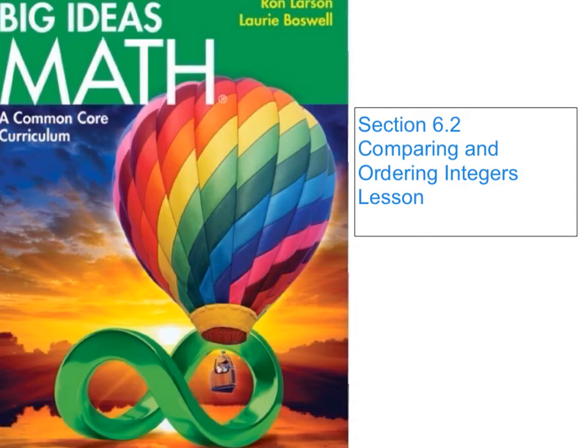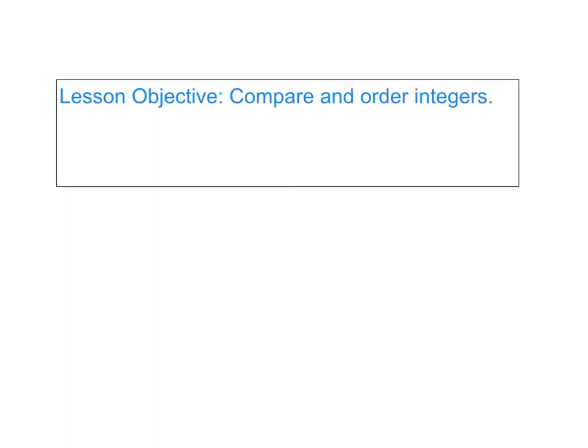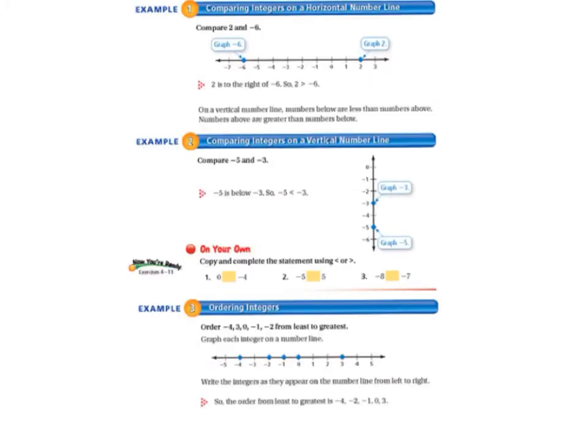Hello 6th graders. Welcome to Big Ideas Math Section 6.2, Comparing and Ordering Integers. Pause while you write Section 6.2 Lesson in your math notebook. Pause again while you write today's lesson objective. Today's objective is to compare and order integers. We'll be starting on page 256 in your math textbook.